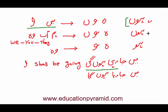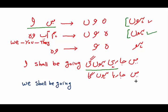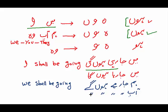For 'we' (hum), 'you' (aap), or 'they' (wo plural), we say: hum ja rahi hum gi for we shall be going. Aap ja rahi hum gi for you. And wo ja rahi hum gi for they will be going.